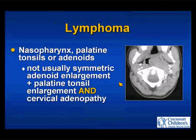Lymphoma can involve Waldeyer's ring — palatine tonsils, adenoids, cervical nodes — but not usually symmetric adenoid plus palatine tonsil plus cervical nodes involvement together.